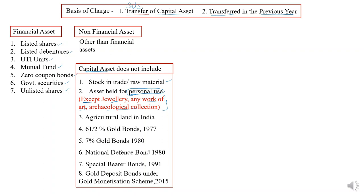Other assets that are not capital assets include agricultural land in India, 6.5% gold bond, 7% gold bond, national defense bond, special bearer bond, and gold deposit bond under the Gold Monetization Scheme 2015. These assets — the sale of these assets — will not be treated under capital gain. They are not capital assets at all.